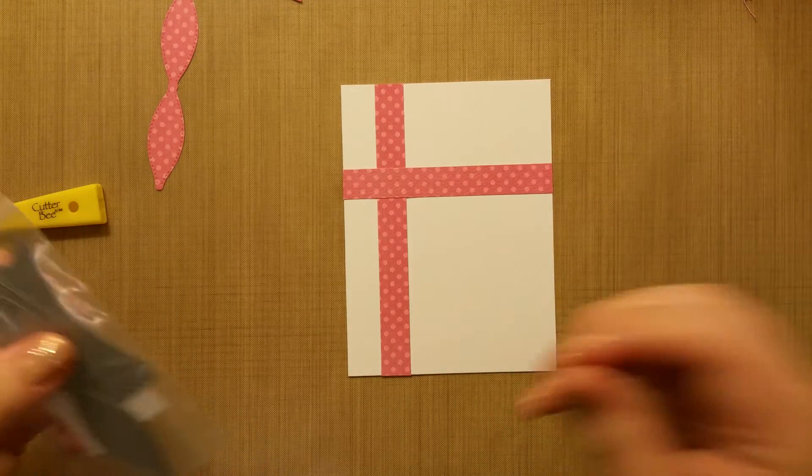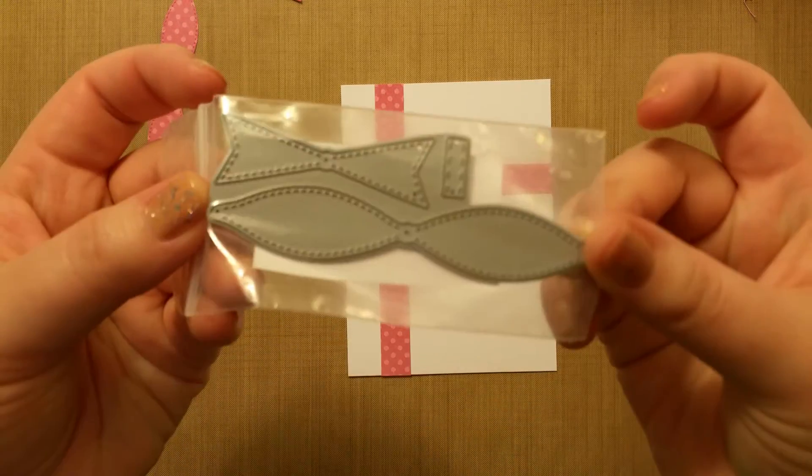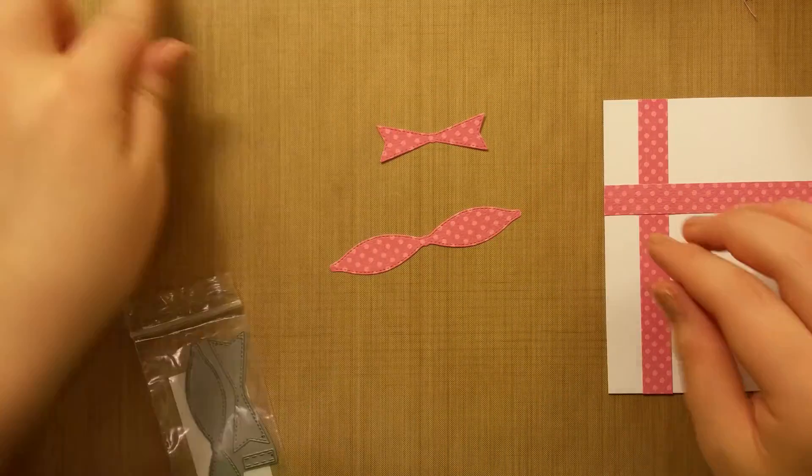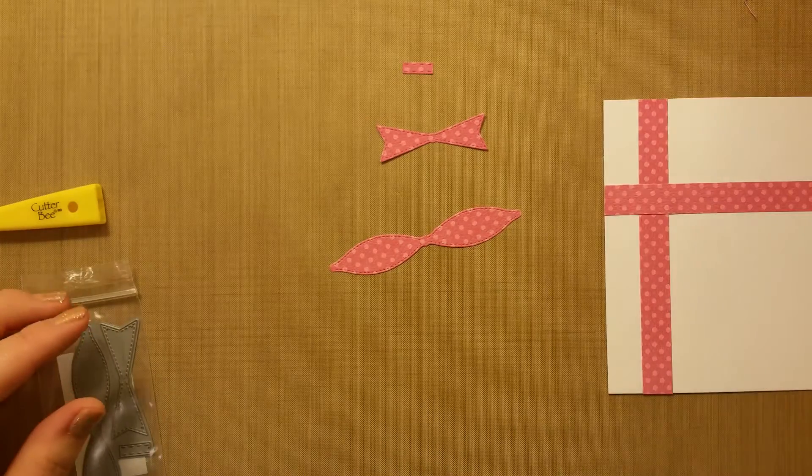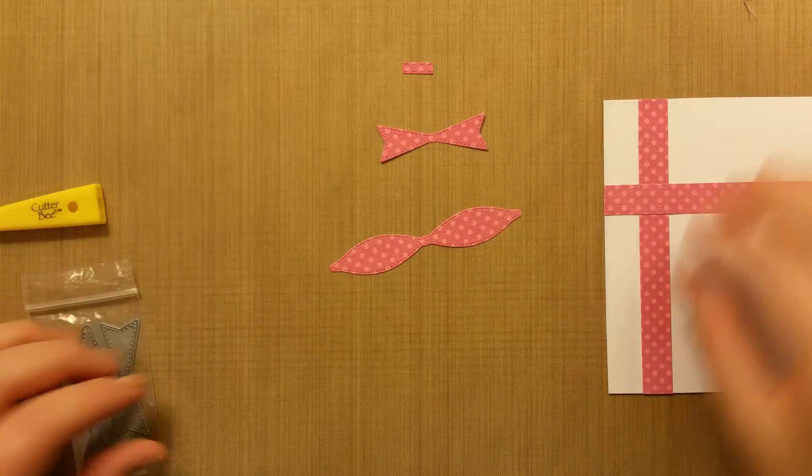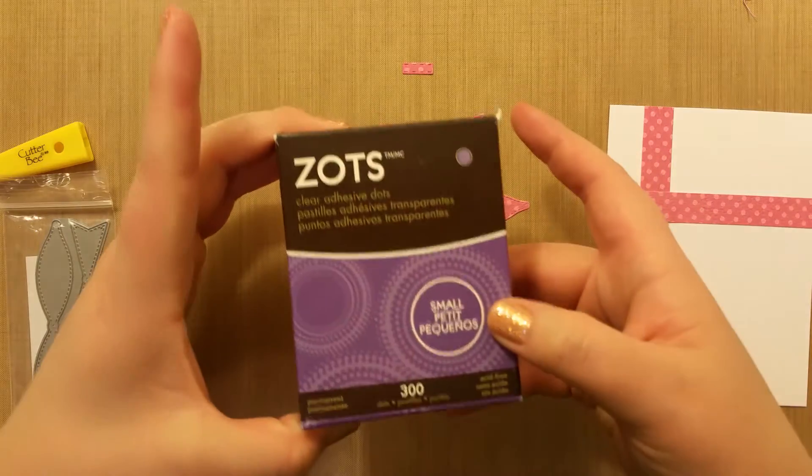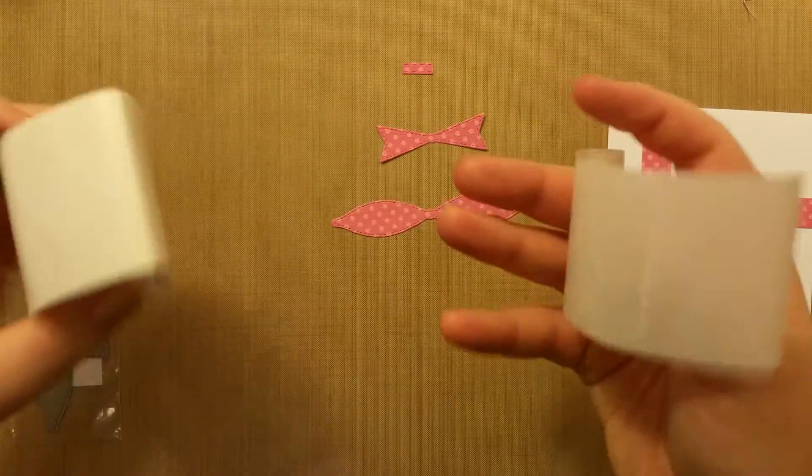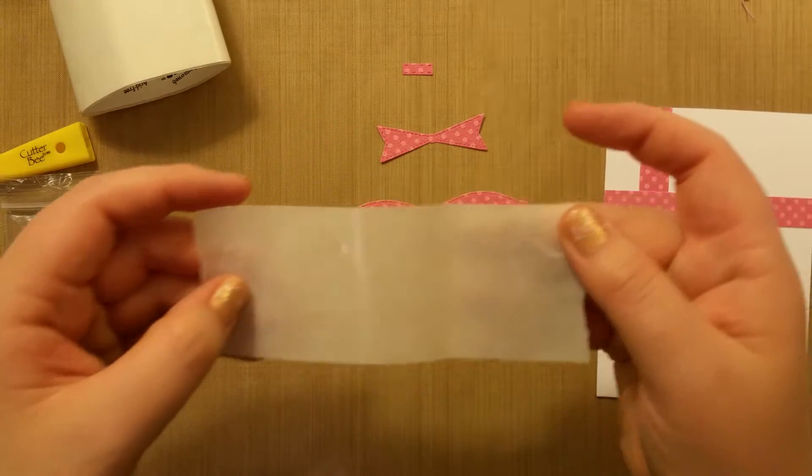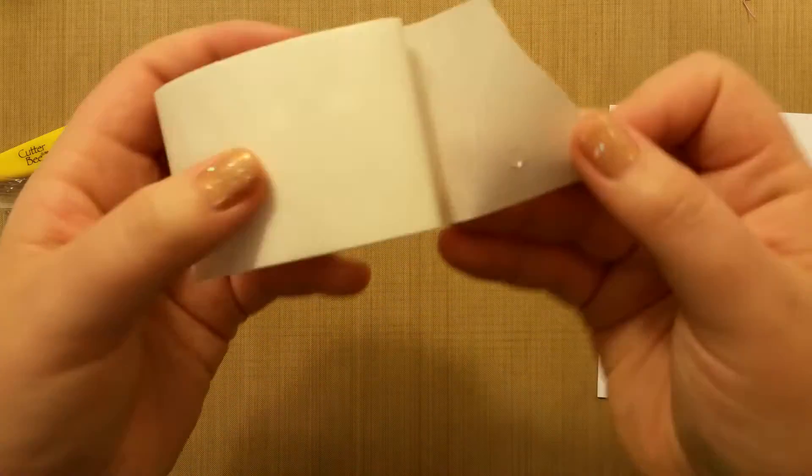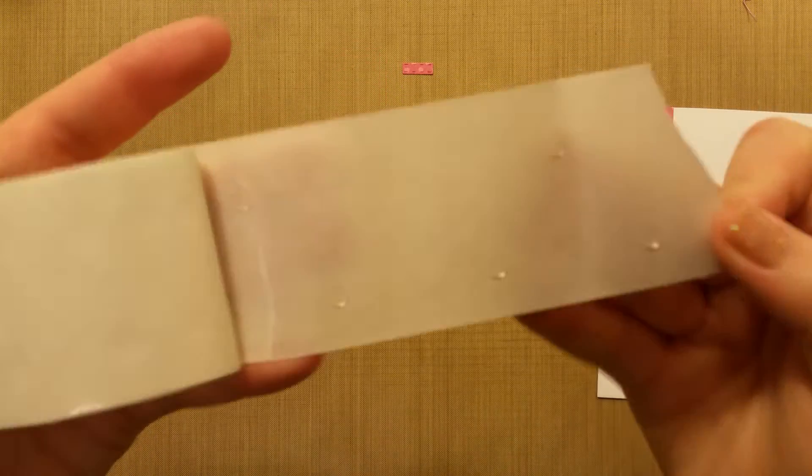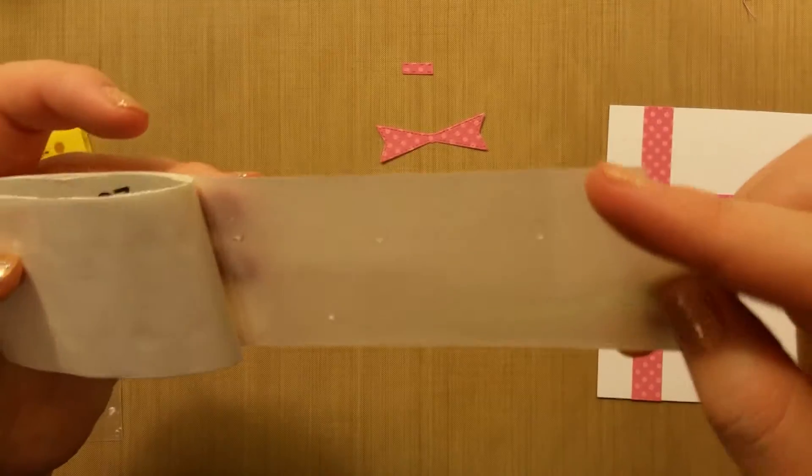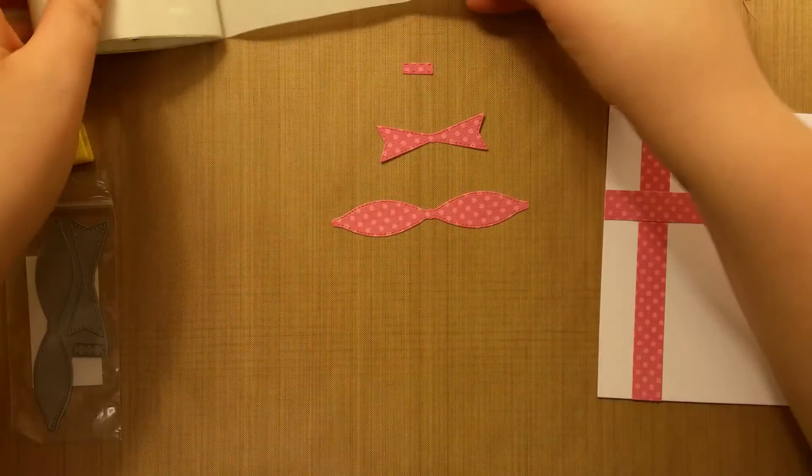Then I have this die from Little Inker Designs, I think it's the Mini Bow, it doesn't have a label, but it gives you three pieces. To put that together, we're going to use the zots or glue dots, and the small ones are probably a little better. You can kind of see how they change in size, and it's really hard to see them when you're working with them because they're pretty invisible on the sheet.